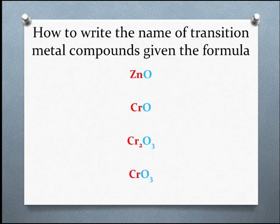What's the name of ZnO? Because zinc only has one oxidation state, no Roman numeral is necessary. This compound is zinc oxide. Don't call it zinc(II) oxide because that would be incorrect. Remember not to use Roman numerals except for elements with multiple oxidation states.